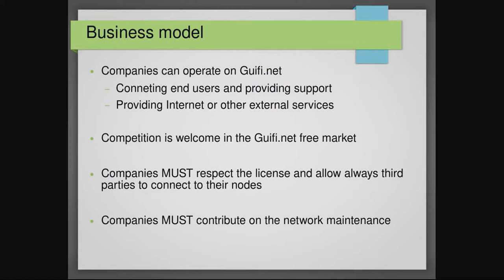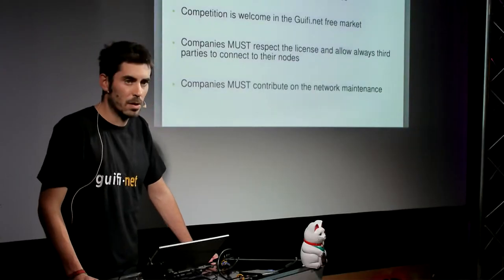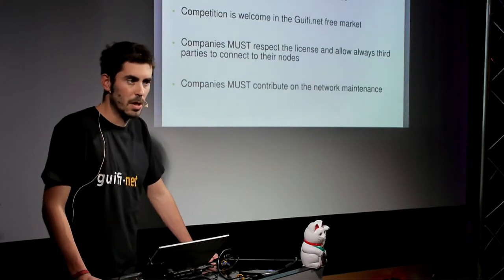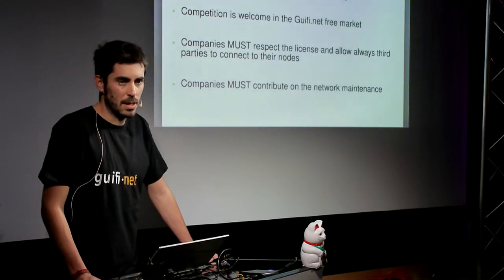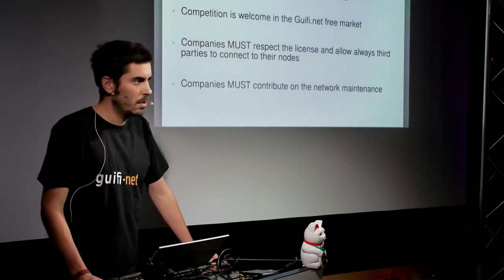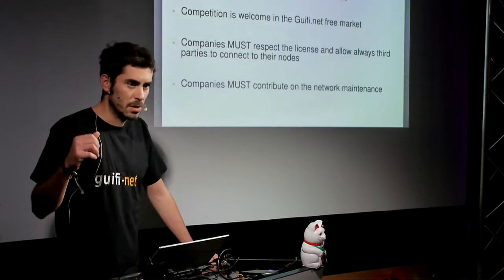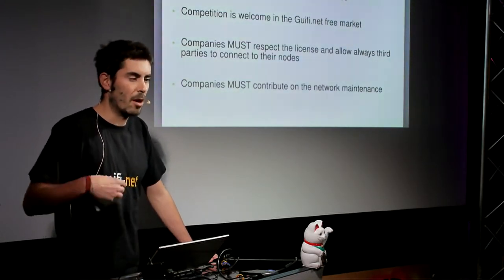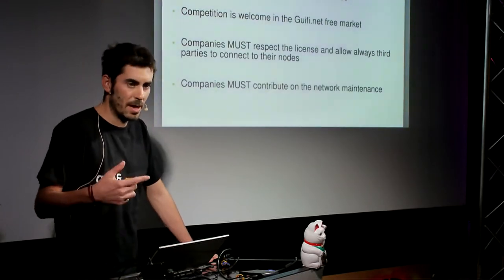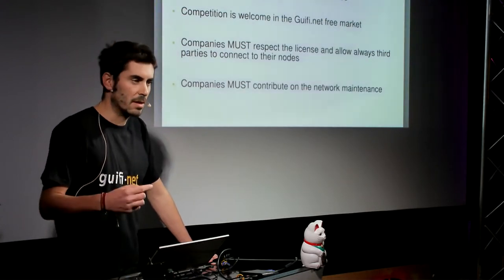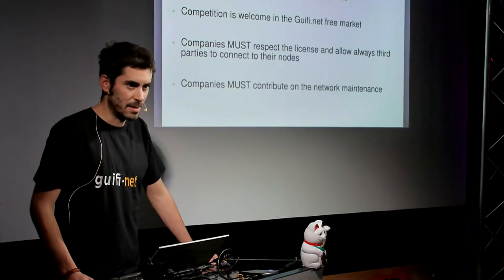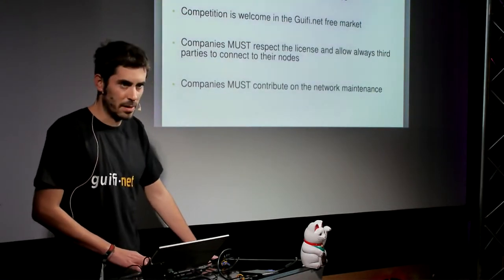The important thing for the companies, users, and everyone connected to this network is that they must always respect the license, which says the network must be always open and free. As you are using parts of the network which are not yours, you must allow other people — third parties — to connect also to your nodes. This way, even if companies have private business models inside the network, they will always respect the basics of the free network license and the free network movement.